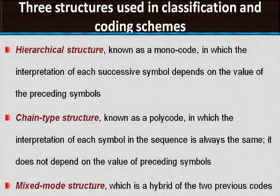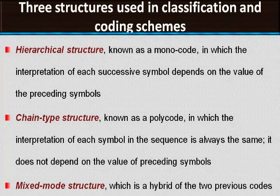The third variety is the mixed coding structure, which is a hybrid of the previous codes. Some portion of the code follows monocode structure and the remaining portion follows polycode structure, which combines the advantages of both coding structures previously discussed.